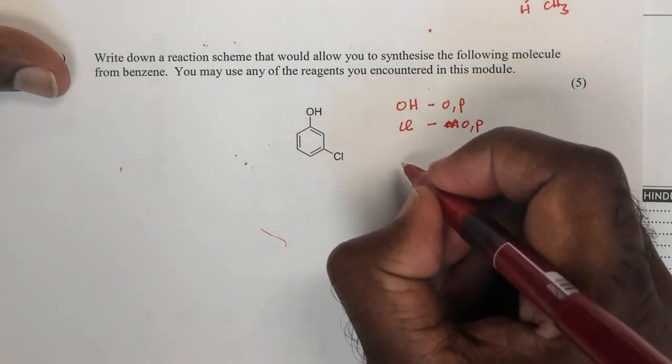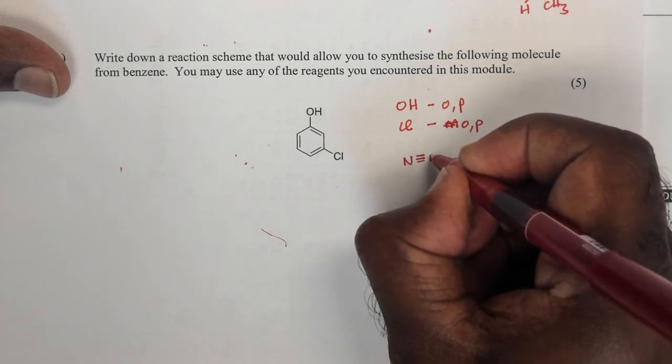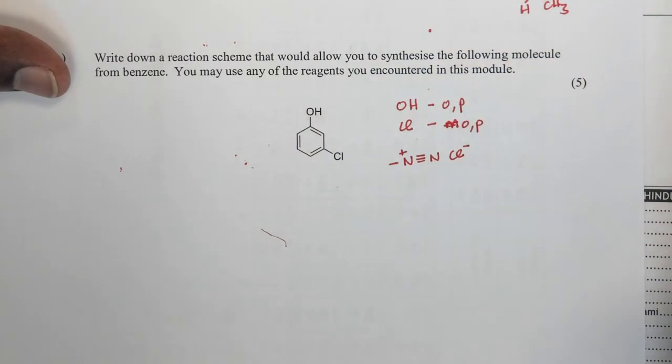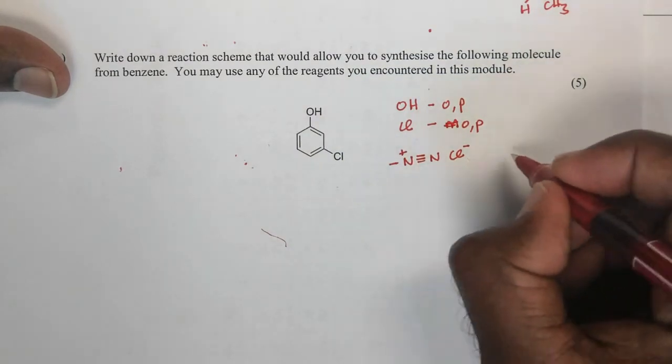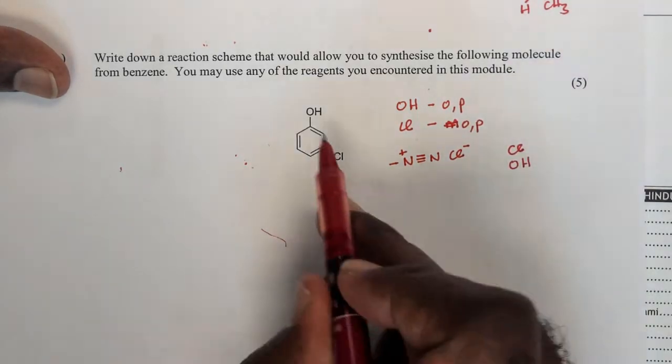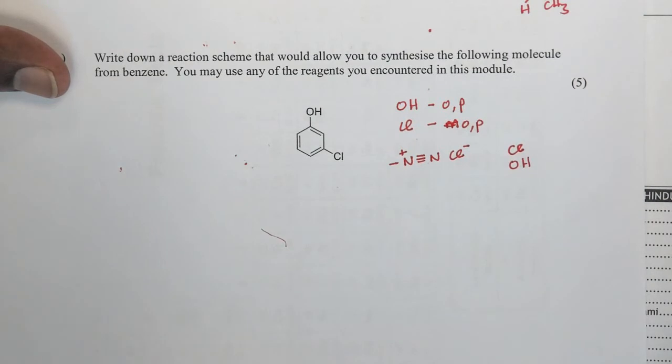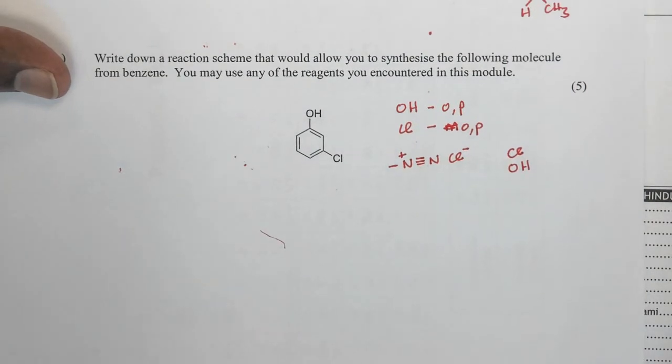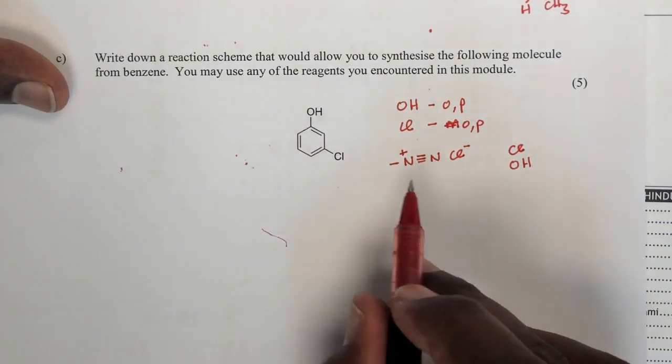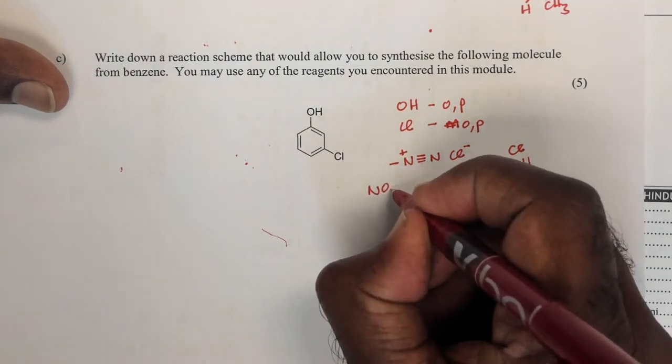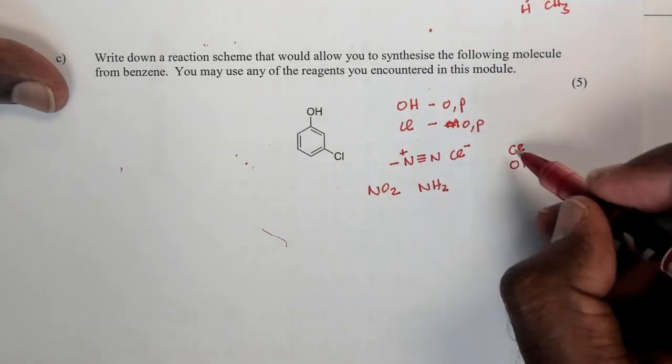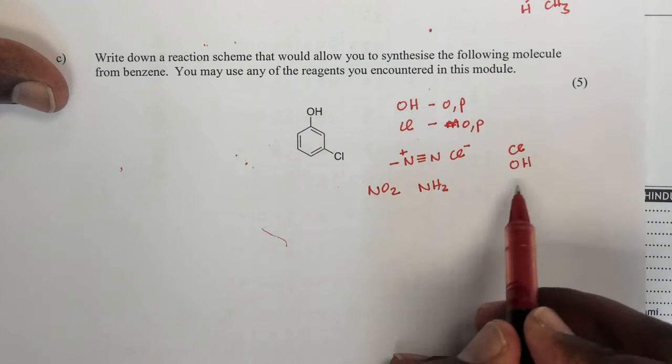Now, we learned that we can make a diazonium salt. And in making that diazonium salt, we can use certain reagents and convert that to a chloro-group or convert it to an OH-group. So I can use it for either one. But what I will do first, I'm going to use it to nitrate first, because the way I can put this group on is through a nitro-group and then reduce it to NH2 and then form the diazonium salt and then replace it. So if I look at the sequence of reactions here,